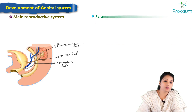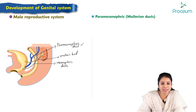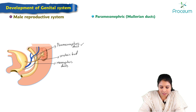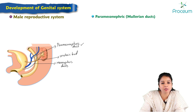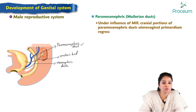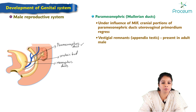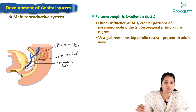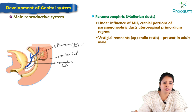Regarding what happens to the paramesonephric or Müllerian ducts in males: under the influence of Müllerian inhibiting factor, the cranial portions of the paramesonephric ducts and the uterovaginal primordium will regress. Vestigial remnants of the paramesonephric ducts, called the appendix testis, are present in the adult male.